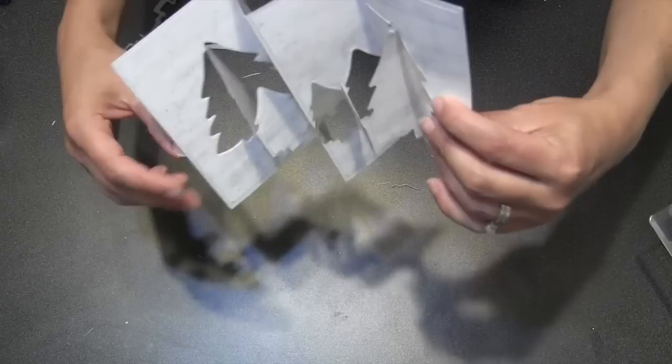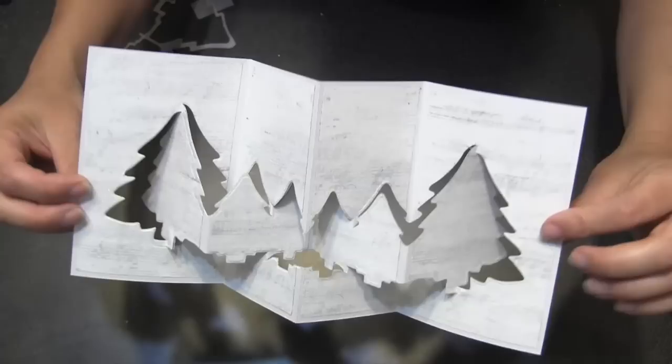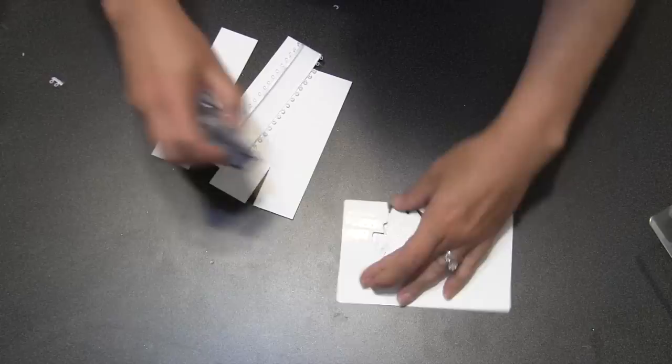Then you should be able to grab the two big trees and carefully close the card, working those trees to pivot opposite the big pages. And then just give everything a good squish. Now you can see what you've got - you've got this really cool double pivot card.